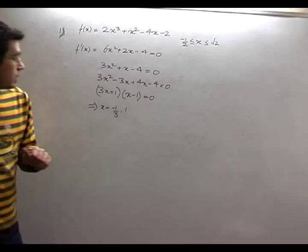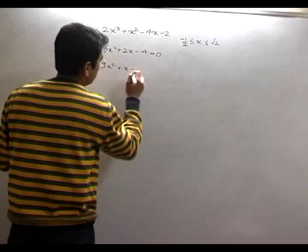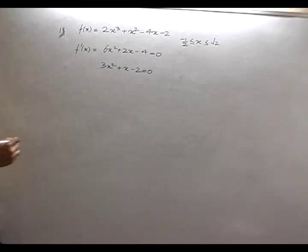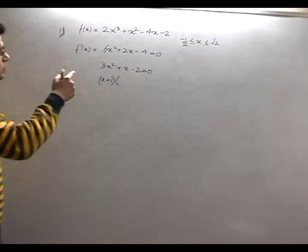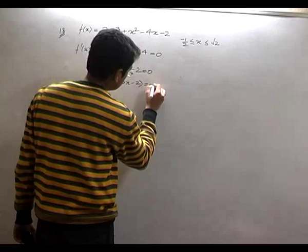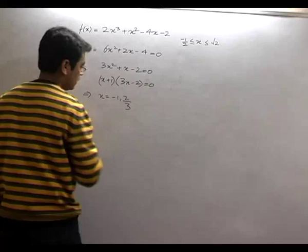Oh yeah, sorry, I made an error. This 4 came here by mistake, this will be 2 over here. The wrong equation formed. So if I solve this, what will I get? This becomes x + 1, and one will be 3x - 2. 3x - 2 = 0, that implies x = -1, 2/3.